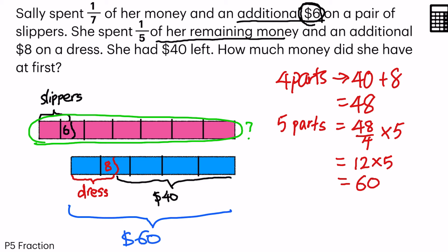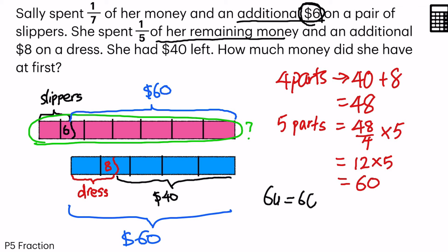This portion here is equal to $60. And you can see there are 1, 2, 3, 4, 5, 6 units. If my $60 plus that $6, it would be equal to 6 units. So 60 plus 6 equals 66, and my 6 units equals $66.